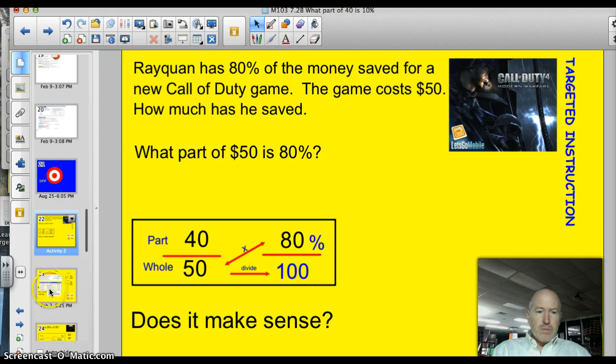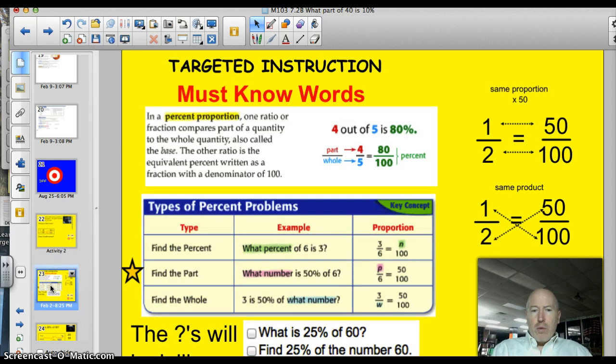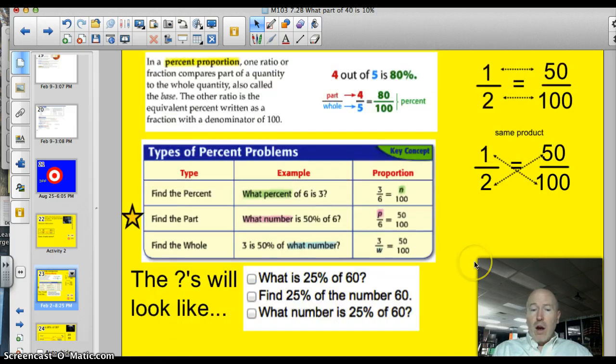A little review. Percent proportion, we talked about last night. That's when you have a fraction on one side and a percent proportion on the other. You've got 4 fifths, which represents the part you have and how many parts in a whole. And then also the percentage. Well, if you take a look at it, you also have these fractions over here. Remember how we went from 1 to 50 and 2 to 100? Whatever you do to the top, you do to the bottom. In this case here, we multiplied by 50. Also, a quick review about the cross products in two equal fractions, always equaling the same product.